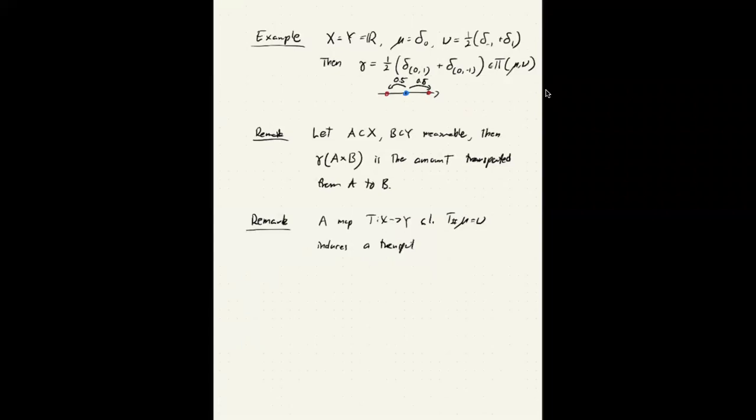And the way to get a transport plan from this is just to put γ_T to be the pushforward of (id × T) of μ. This map here is a map from X to the product X times Y. Then we are just pushing forward the source measure with this map. And that gives us a transport plan, which corresponds exactly to the map T. In fact, it's supported on the graph of T.